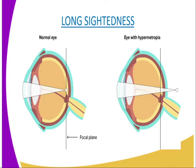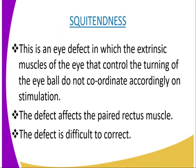We have got another defect of the eye, which we call squintedness. This is an eye defect in which the extrinsic muscles of the eye that control the turning of the eyeball do not coordinate accordingly on stimulation. The defect affects the paired rectus muscles, which turn the eye up and down, and the lateral rectus muscles, which move the eye left and right. In this condition, the eyeballs face different directions, hence focusing and accommodation are achieved with difficulty. This defect is very difficult to correct.